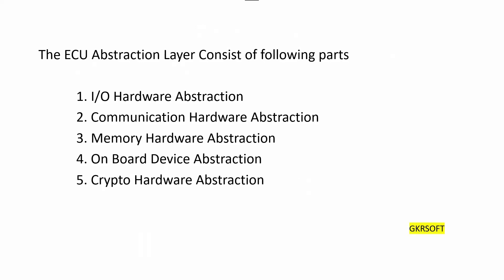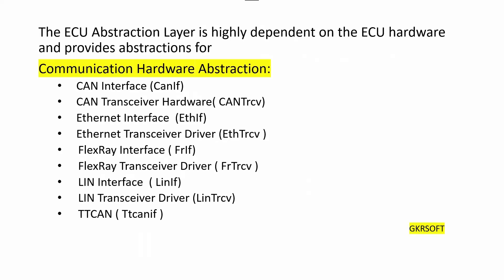The ECU abstraction layer consists of the following parts. In this video we can discuss more deeply about all these abstractions. The ECU abstraction layer is highly dependent on the ECU hardware and provides abstractions. Every abstraction has many interfaces, and we can see them one by one.